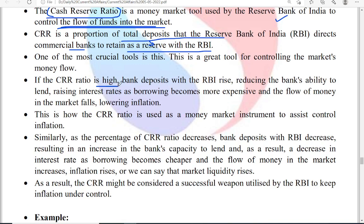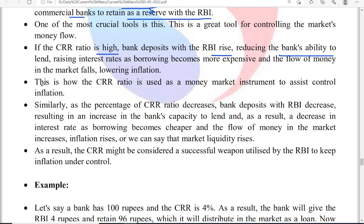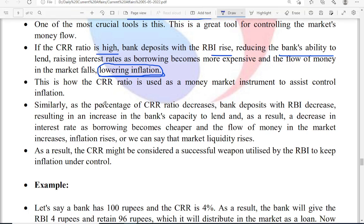If CRR is high, bank deposits with RBI rise; therefore, the bank's ability to give loans reduces. It is used to control inflation — if the amount dispersed by the bank is low, the amount of money in the market decreases, which helps in controlling inflation. This is how CRR is used to control inflation.